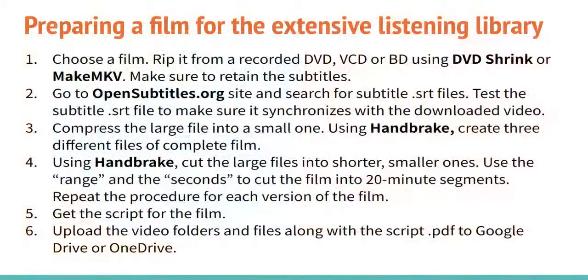Then you use Handbrake to make three master copies of the film: one with the student's language in subtitles (for example, Japanese), one with English subtitles, and one with no subtitles. You can also use Handbrake to edit those into shorter segments — like 20-minute segments, or even 10-minute segments for beginning level — so you break the film up into these segments.